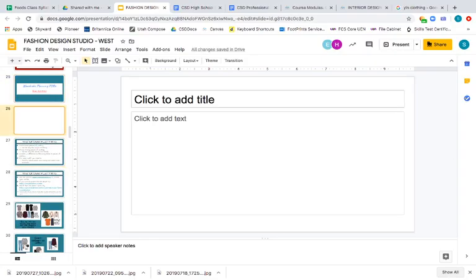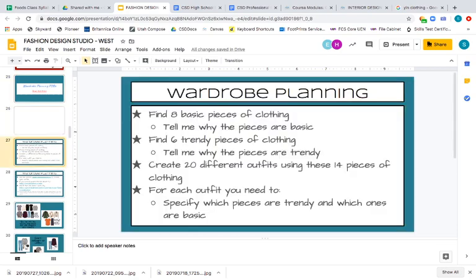Okay, guys. So what we're going to do is talk about your wardrobe planning assignment. This is your performance objective number six assignment. It's worth 30% of your grade. What you're going to need to do is find eight basic pieces of clothing. Tell me why they're basic. We just went over that. Then you need to find six trendy pieces of clothing. Tell me why they're trendy. We just went over that. Then you're going to create 20 different outfits using these 14 pieces of clothing. And for each outfit, you need to tell me which ones are trendy and which ones are basic, just like what you saw on the slides.